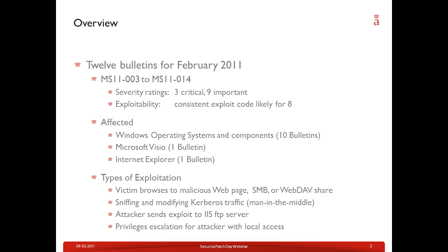There are different kinds of exploitation found in those 12 bulletins. One attack vector is a victim browsing to a malicious web page, an SMB or a WebDAV share. With the Kerberos bulletin, the traditional man-in-the-middle attack applies — if somebody can sniff or modify the traffic, they could exploit this vulnerability. One bulletin affects the Microsoft IIS FTP server, where connecting and submitting malicious traffic can exploit the vulnerability.